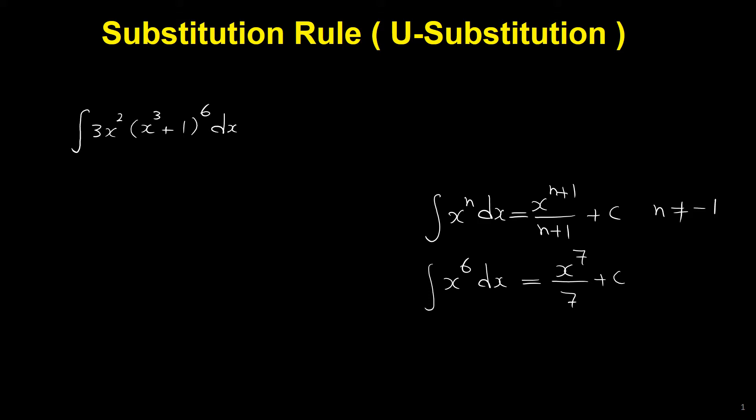The idea of the u-substitution method is to replace a complicated integral with a simpler integral. The first step is to choose u. U is a part of the expression inside the integral — a part of the expression 3x² times (x³ + 1) all to the 6 should be u.